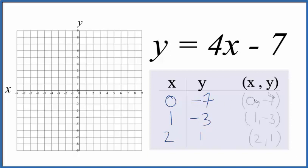So these are the points we'll graph for the equation y equals 4x minus 7. We go to x is 0, y is negative 7. x is 0 and down, y is negative 7.